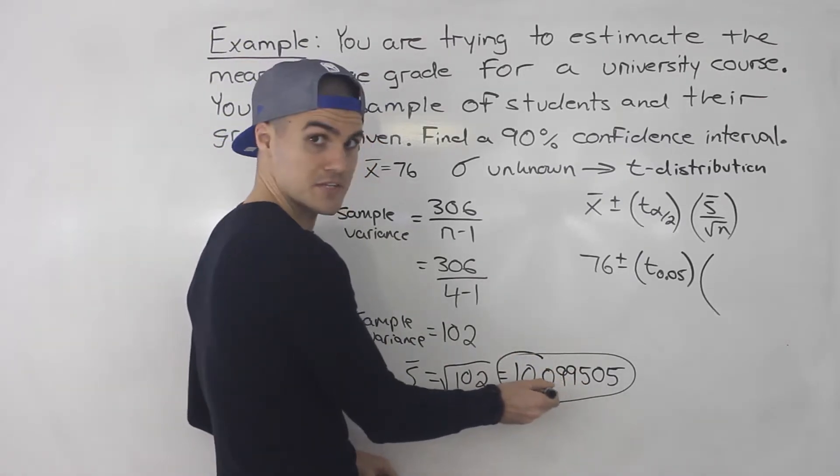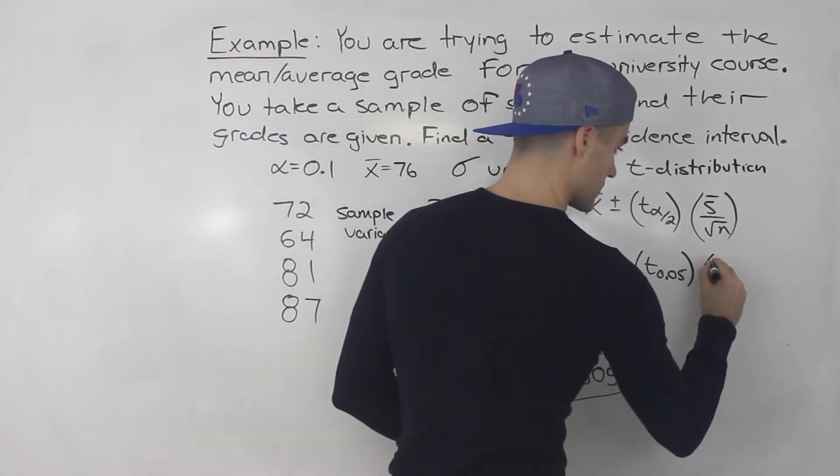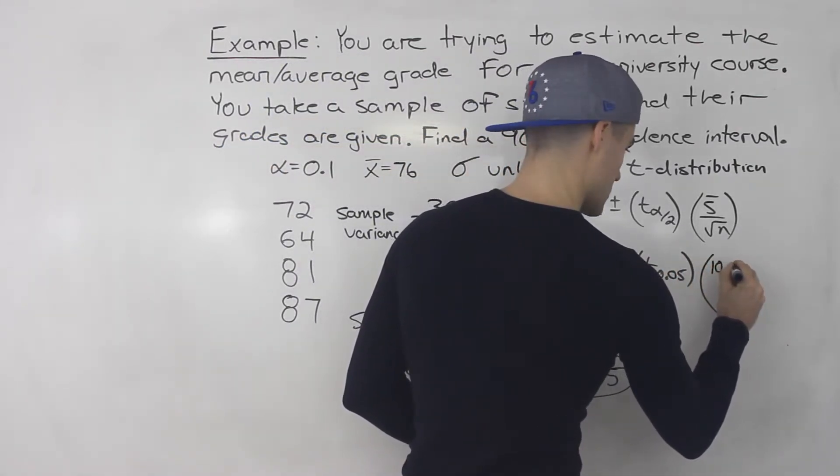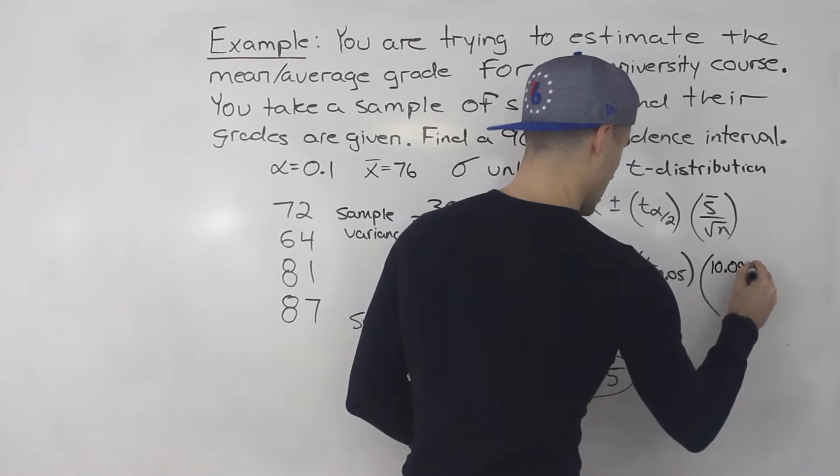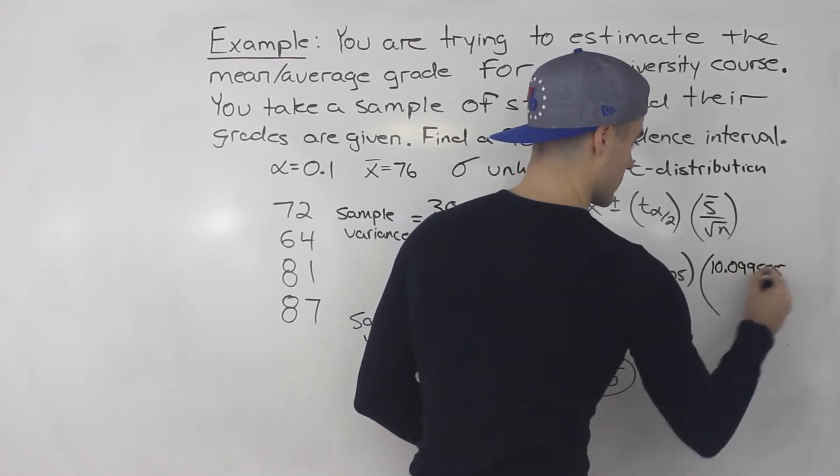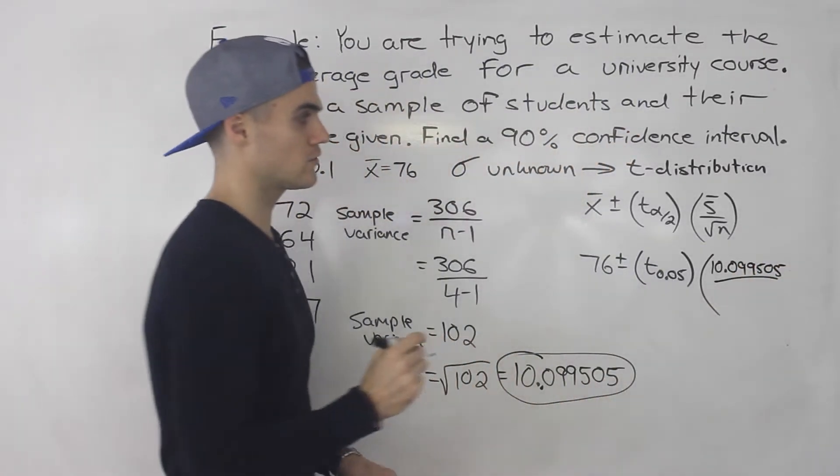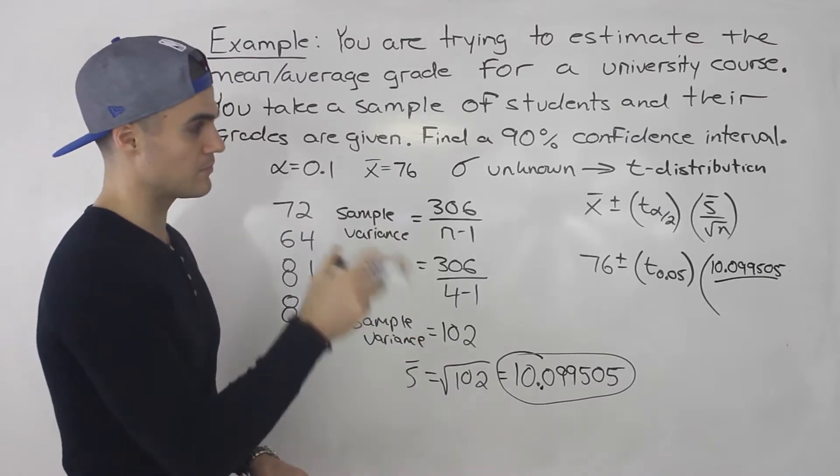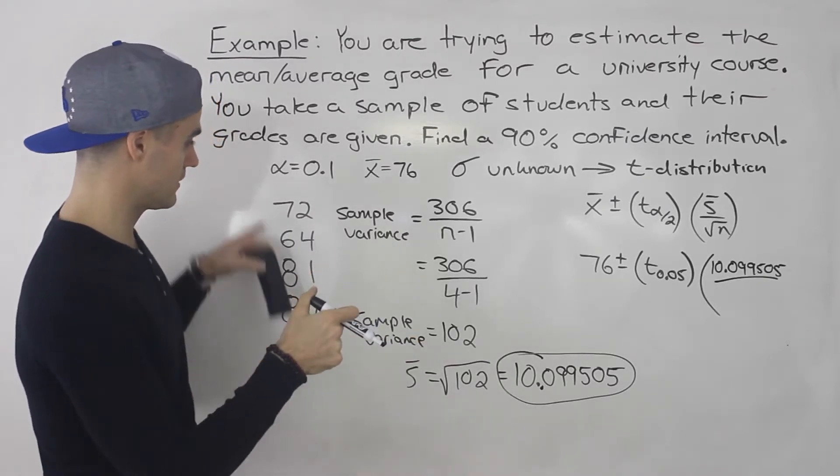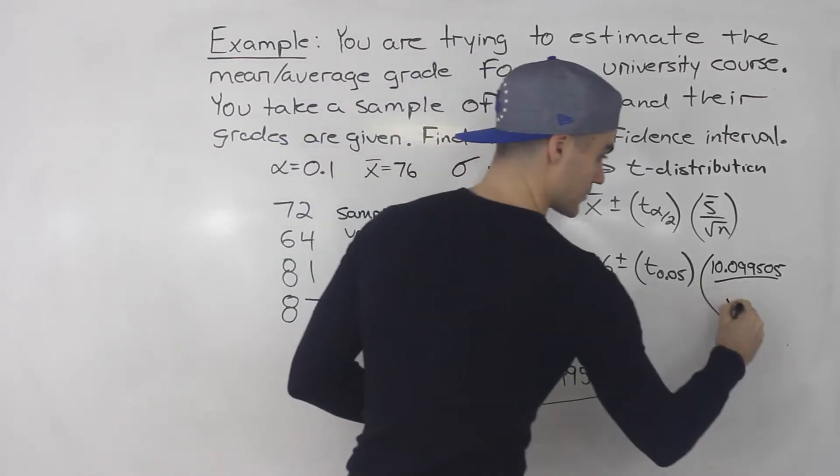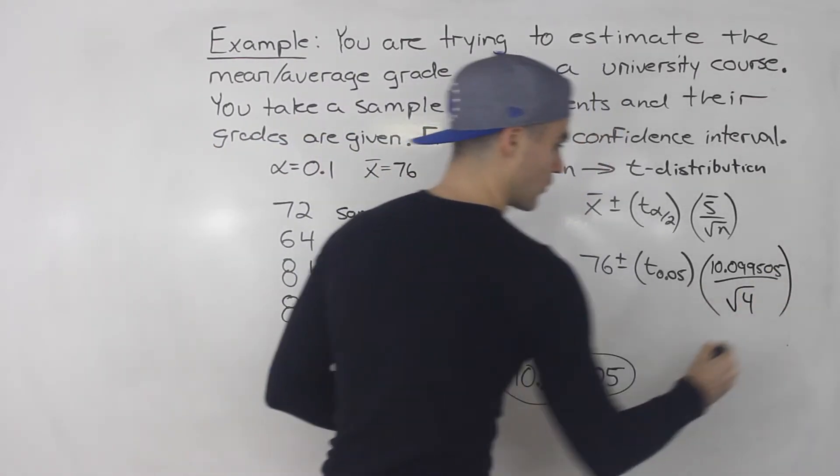So now sample standard deviation we input over here. So that's 10.099505. And we're going to square root it, or we're going to divide it by the square root of n. And the n in this case is 4, right? The sample size is 4.